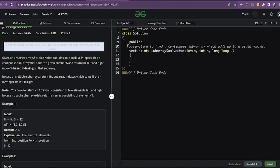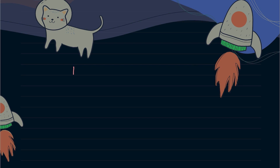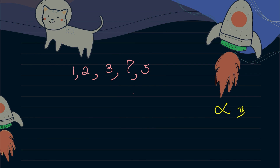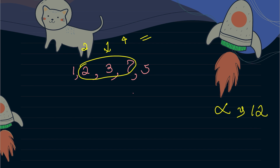Let us see the sample test case. We are given the array 1, 2, 3, 7, and 5, and the target value is 12. The subarray 3, 7, 5 gives us 12, so the answer is index 2 to index 4, using one-based indexing.